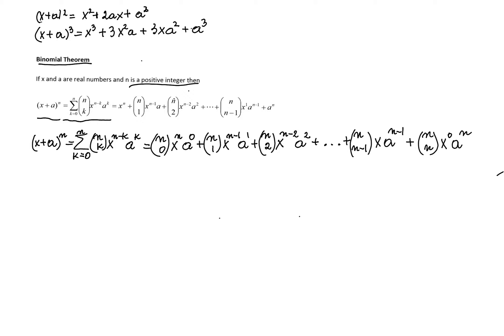n choose k is that binomial coefficient that we discussed earlier. When we expand the sum, we'll obtain the sum that is written right here.